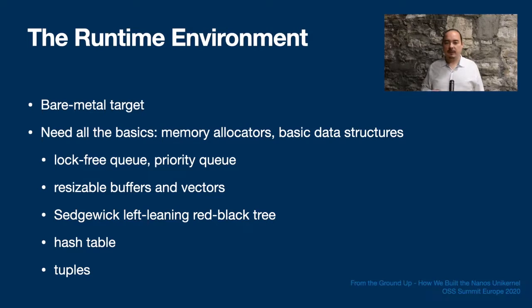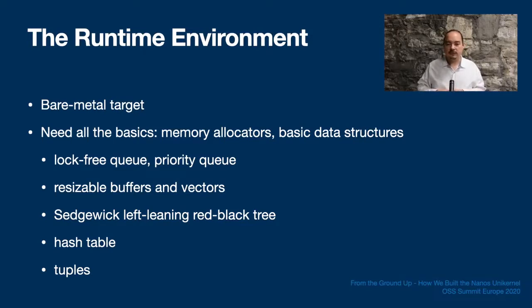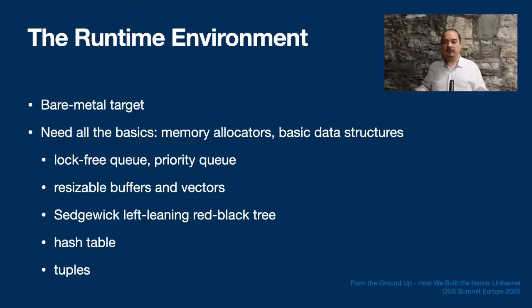The Nanos kernel is built on a foundation which we call the runtime. As we are self-contained and running on bare metal, we need some kind of runtime library for formatting output, allocating memory, managing timers, and things like that. We also need implementations of basic data structures: a linked list type, resizable buffers and vectors, a priority queue for timers, a lock-free queue, a left-leaning red-black tree, a hash table, a symbol table, and a tuple type. We'll focus on aspects of the foundation that are less common, particularly within C in kernel code.